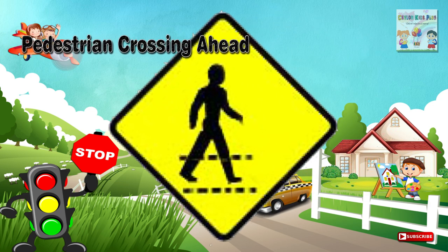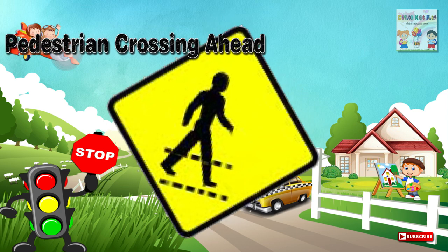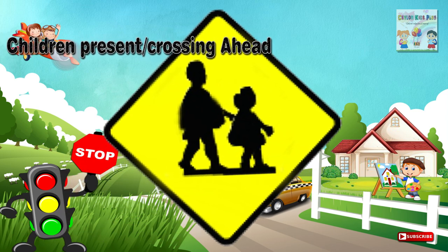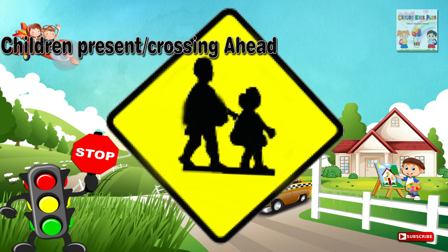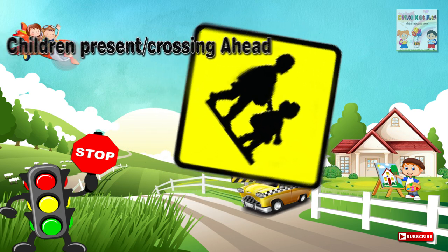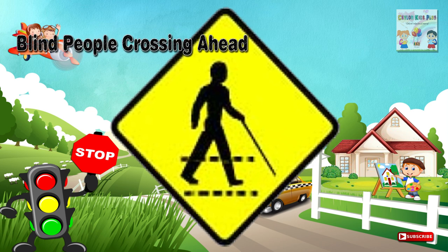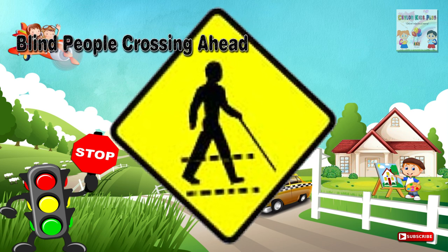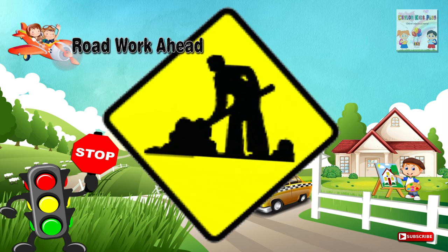Thirty-two: Pedestrian crossing ahead — a place on a road ahead where pedestrians cross the carriageway. Thirty-three: Children present, crossing ahead — a place along the road ahead where a school or playground is located in the vicinity and where children stay on the road or cross frequently. Thirty-four: Blind people crossing ahead — a place ahead where blind people frequently cross the carriageway, as a pedestrian crossing ahead.